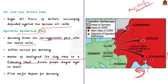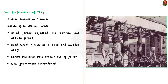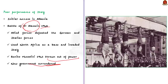Germany's allies did not perform well either. Although Italy had some success in the initial years in Albania, it started facing losses. In the Battle of El Alamein in 1942, Allied forces defeated German and Italian forces and chased them out of North Africa. Using North Africa as a base, the Allies invaded Italy. In 1943, Benito Mussolini was removed from power, a new government came to power, and Italy surrendered to the Allied forces.